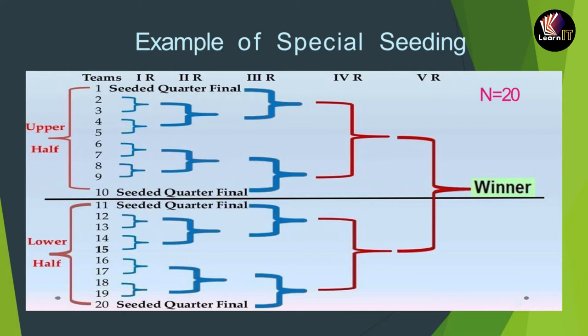In seeding, the top teams are placed at the top ranks of the upper half and at the corresponding position of the lower half. At the time of division into upper and lower halves, all the main powerful teams are divided into two equal halves so that there is an equal chance of them participating in the finals, semi-finals, or emerging as a winner. For example, with 20 teams divided equally, 10 in the upper half and 10 in the lower half — if there are 4 seeded teams, the 1st seed goes to the lower half, the 2nd seed to the upper half, the 3rd seed to the bottom of the lower half's first position, and the 4th seed to the last team of the upper half.